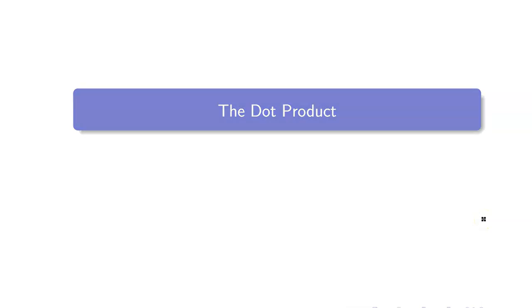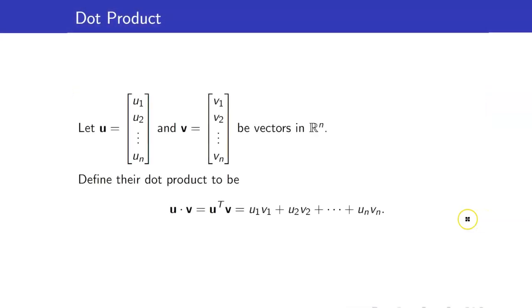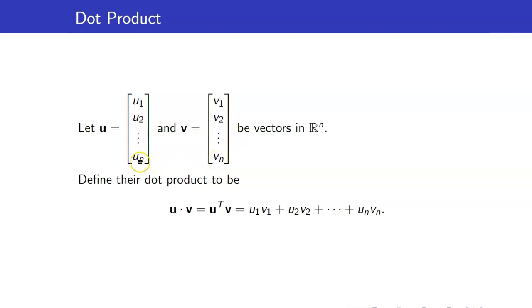In this lesson, I am going to discuss the dot product. Suppose that we have two vectors u and v in R^n. We define their dot product to be the transpose of u multiplied with the vector v. That will be equal to u1*v1 plus u2*v2 up to un*vn. So basically, we are just multiplying the components and getting the sum of all those terms. Take note that the dot product of two vectors is a scalar.